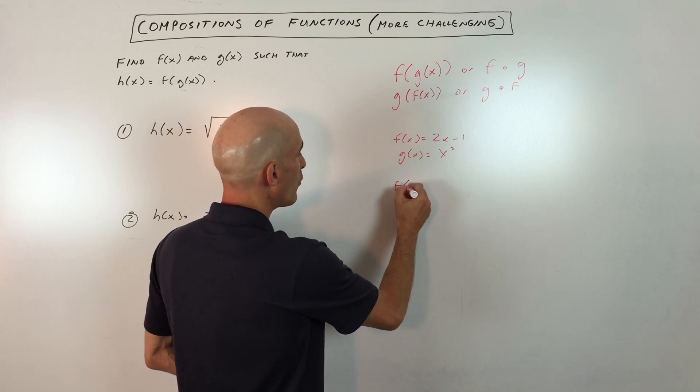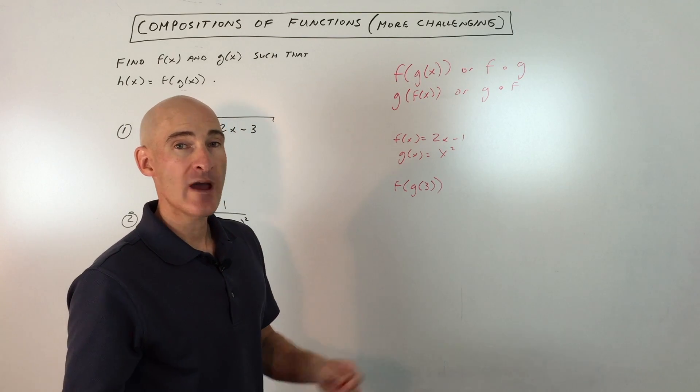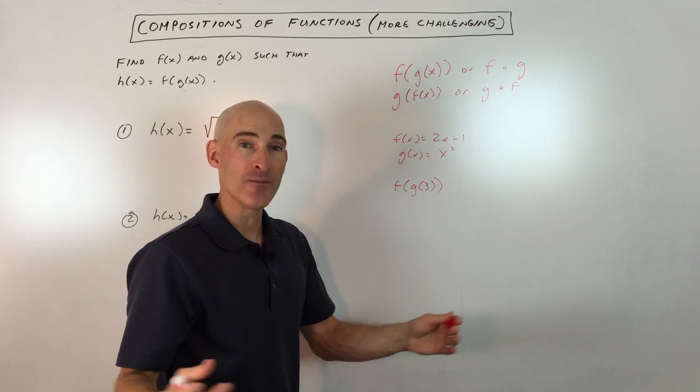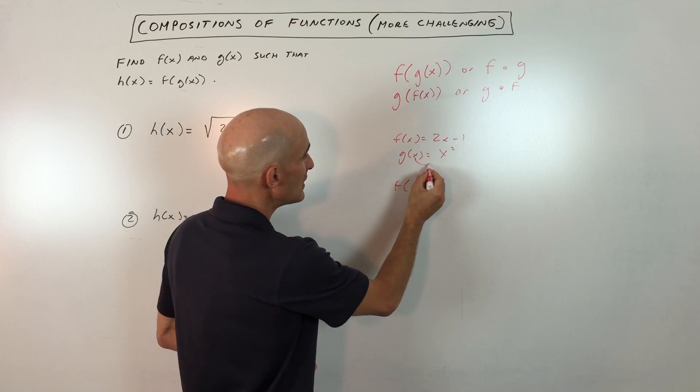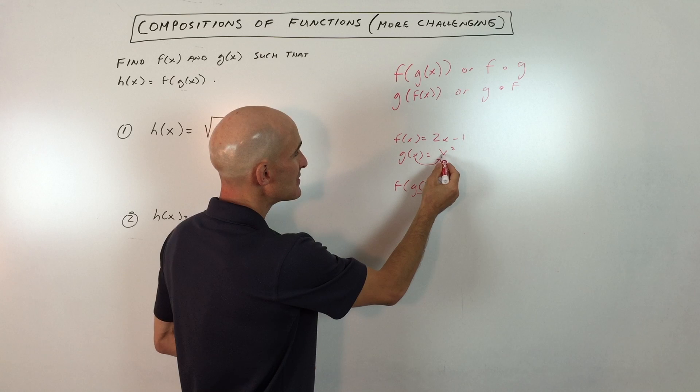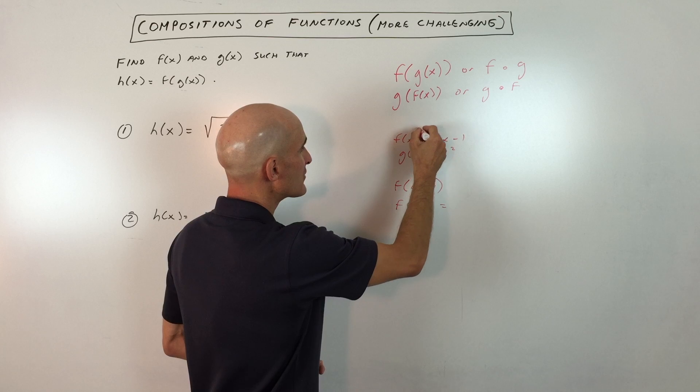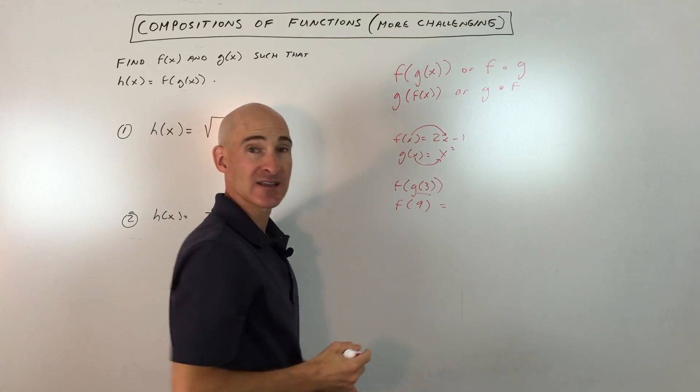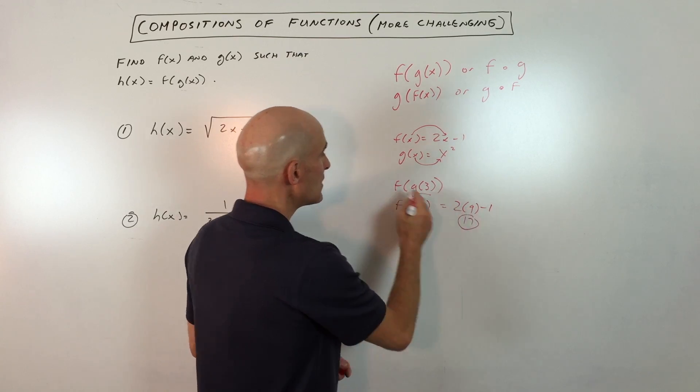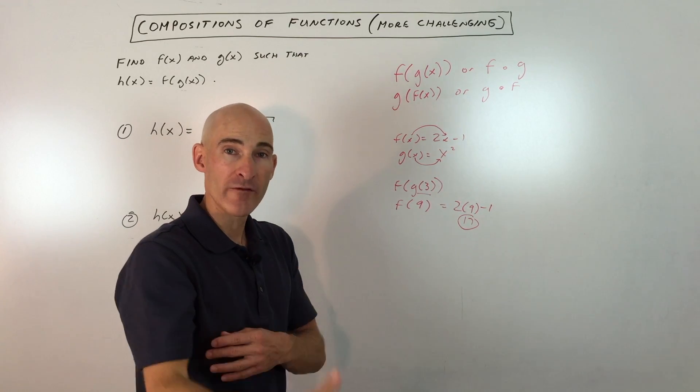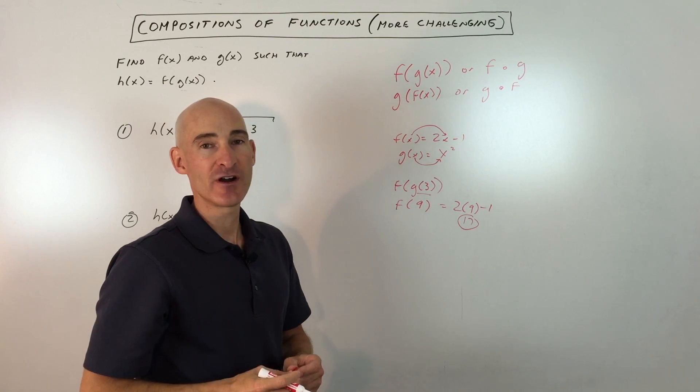Say we want to find f(g(3)). Just like order of operations, you start from the inside and work your way out. We go to the g function and put 3 in for x, so 3² = 9. Now we have f(9), and whatever's in parentheses is our input that goes in for x. We get 2(9) - 1 = 17. The result of doing one function becomes the new input in the next function - that's composition of functions.